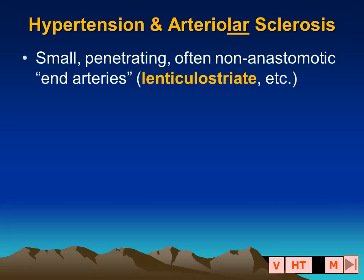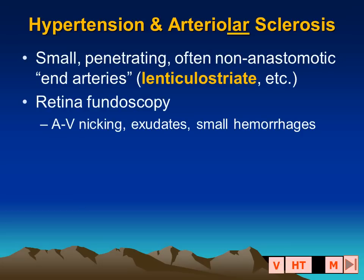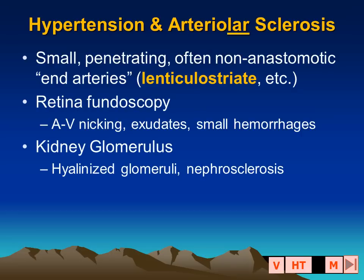These hypertensive changes primarily affect small caliber vessels — penetrating non-anastomotic end arteries, most particularly the lenticulostriate vessels that supply the basal ganglia and the internal capsule. The same type of hypertensive vessel changes may be seen looking at the patient's fundus with AV nicking, exudates, and small hemorrhages.